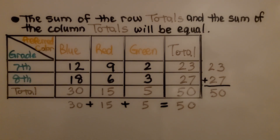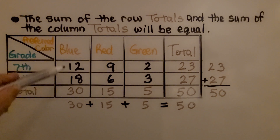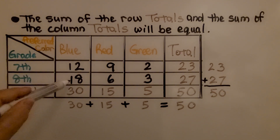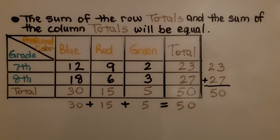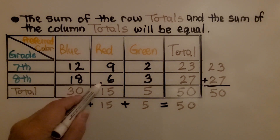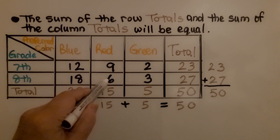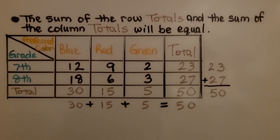From this two-way frequency table, do you think a seventh grader or eighth grader would prefer a blue shirt? We look at blue for seventh and eighth grade and we see that eighth has a greater number, so eighth graders would prefer a blue shirt. But we can see that eighth graders would be less likely to choose a red shirt because there are only six compared to nine seventh graders.